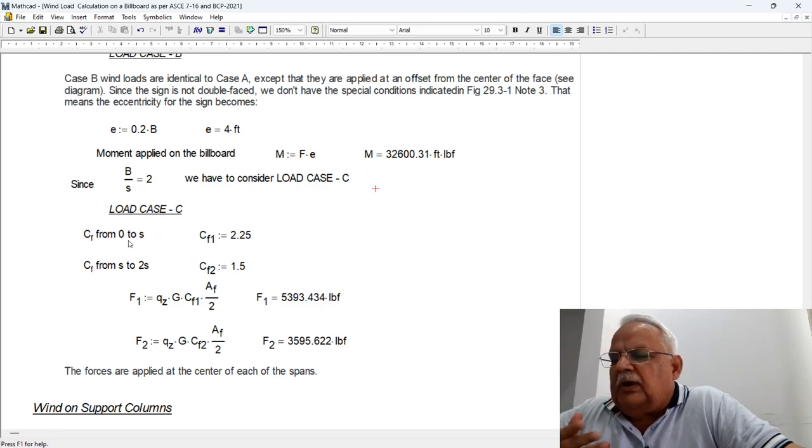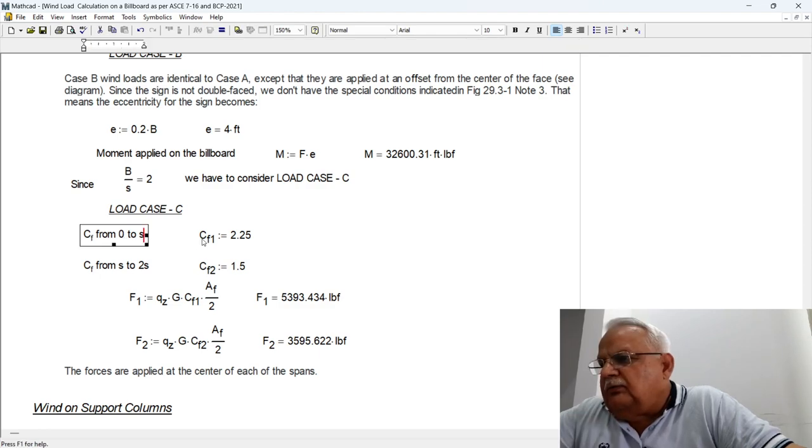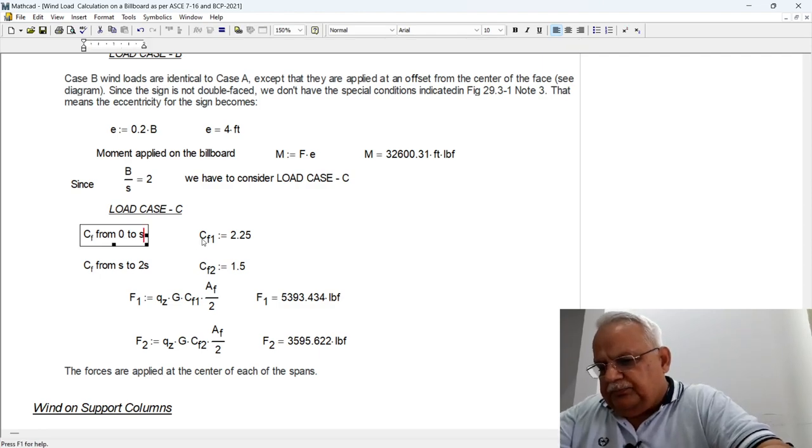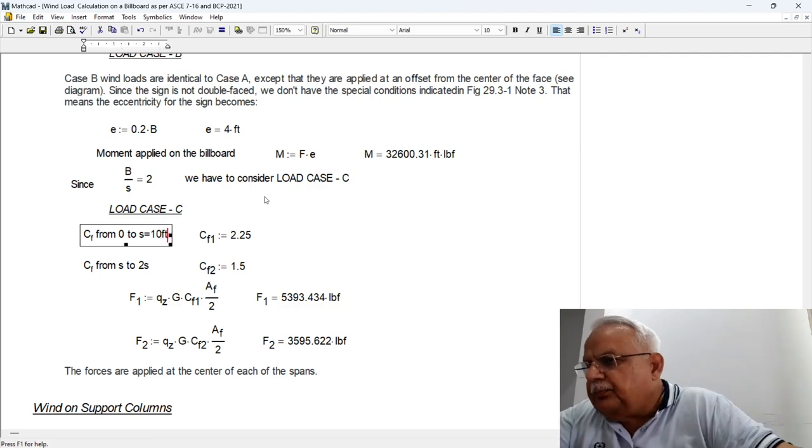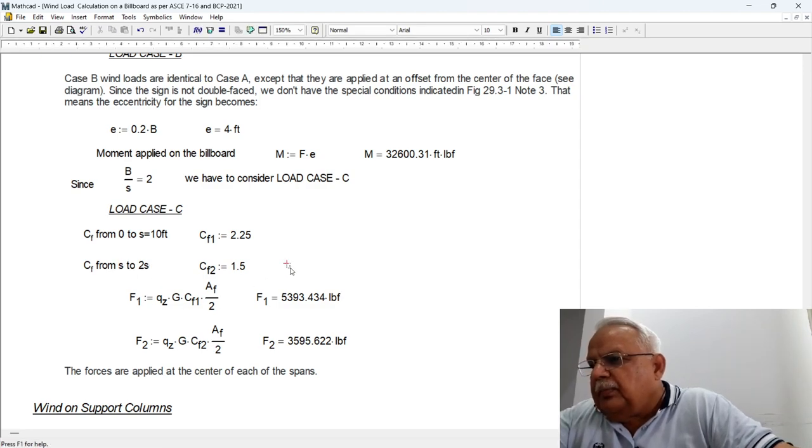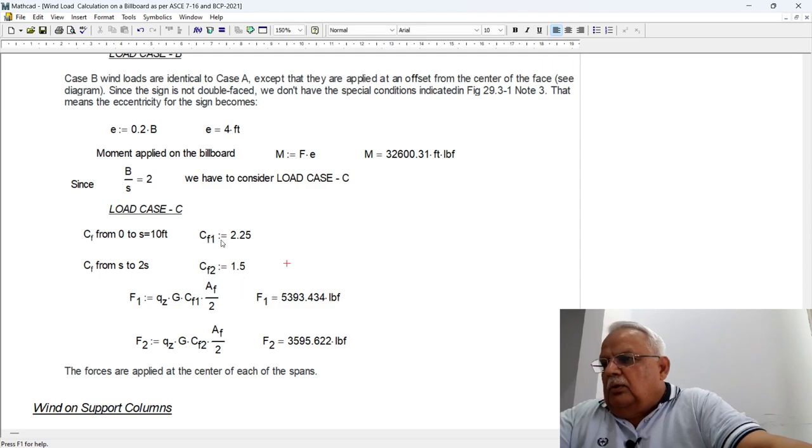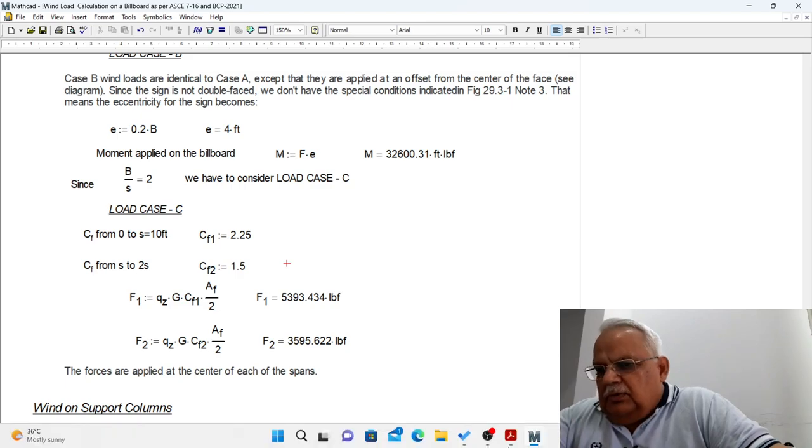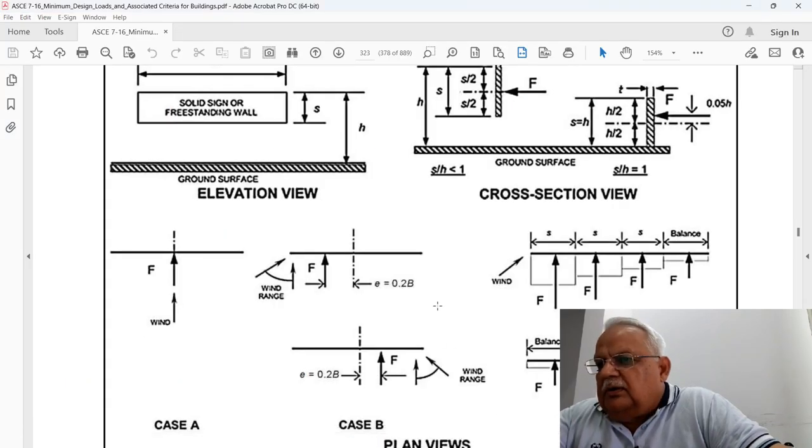In load case C, the billboard width is divided into various segments starting from 0 to S, S to 2S and so on. But since our billboard is 20 feet wide, the first segment is 0 to S which is 10 feet, and from S that means 10 to 20 feet. So these two values, the coefficients of the forces, are taken from the same figure.